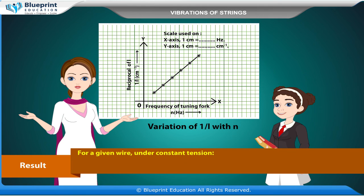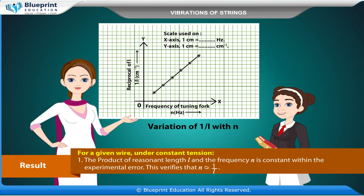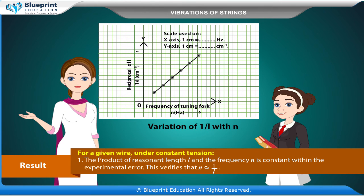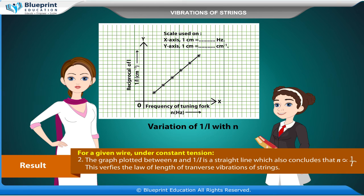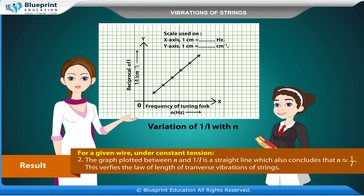Result: For a given wire under constant tension, the product of resonant length l and the frequency n is constant within experimental error. This verifies that n is proportional to 1 by l. The graph plotted between n and 1 by l is a straight line, which also concludes that n is proportional to 1 by l. This verifies the law of length of transverse vibrations of strings.